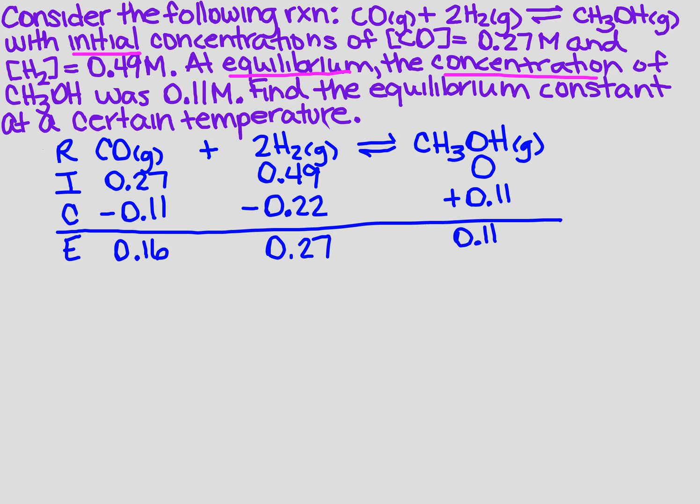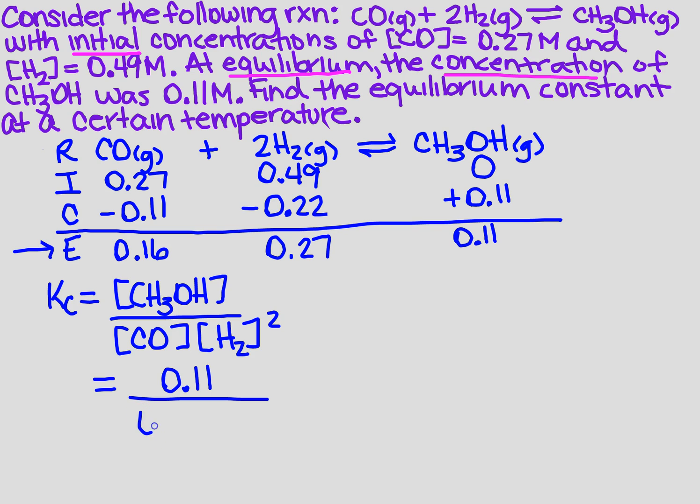Well, now I know what all of the concentrations are at equilibrium, so now I just need to find K sub C. So if you recall, K sub C equals the concentration of the product. I don't have a coefficient, so it's not raised to any power. Divided by the concentration of the reactant, so I've got CO, it's a 1, so it's not raised to anything. I've got H2, there are 2 of them, so that's going to be squared. I'm going to put in what I just found right here for the equilibrium. So I'm going to have 0.11 over 0.16 times 0.27 squared.